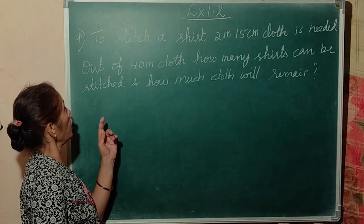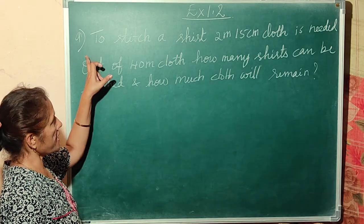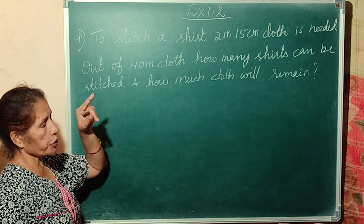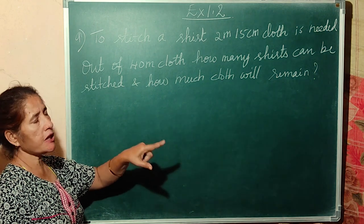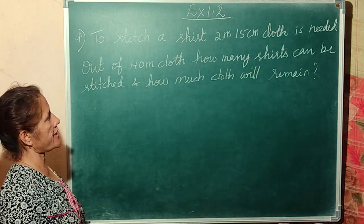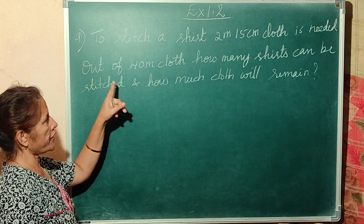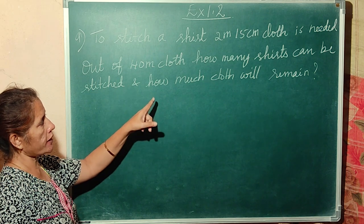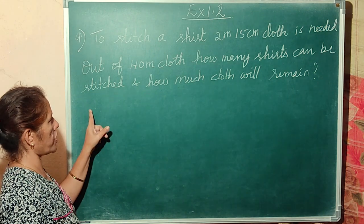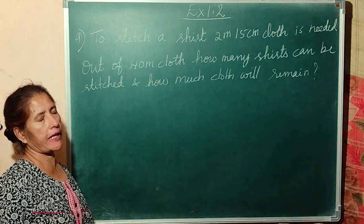Now look at the 9th question. To stitch a shirt, 2 meters 15 centimeters of cloth is needed. Out of 40 meters of cloth, how many shirts can be stitched and how much cloth will remain?